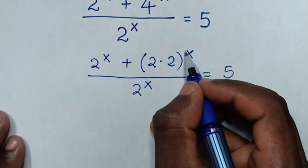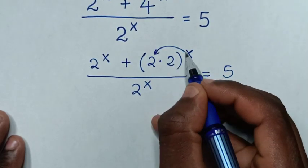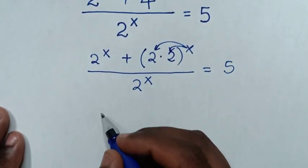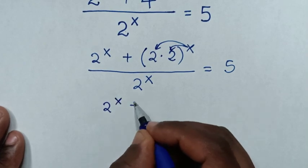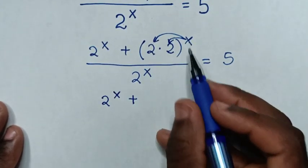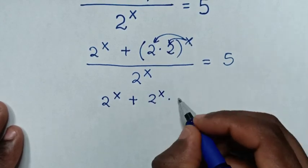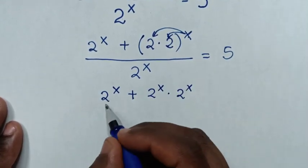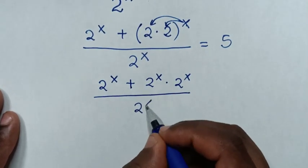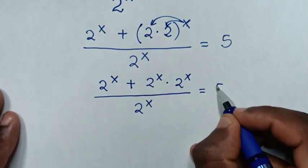Then we'll take this power of x inside the bracket, so it will be this 2 power of x, then plus 2 power of x, then times 2 power of x over this 2 power of x is equal to 5.